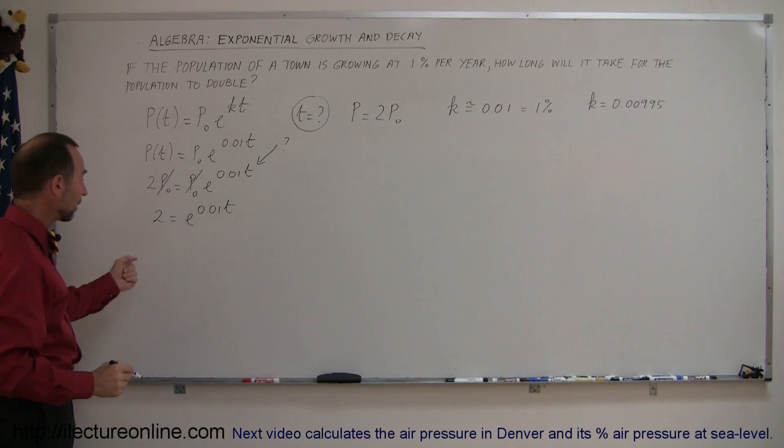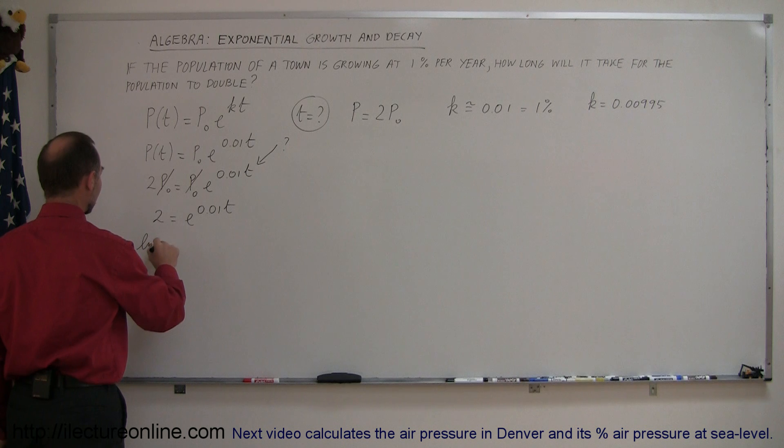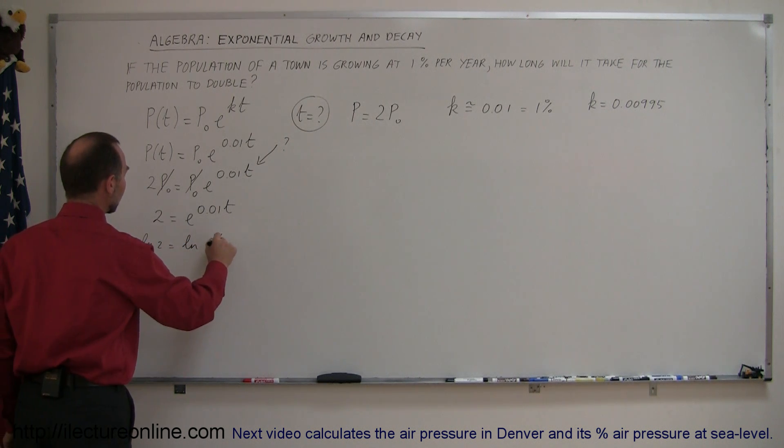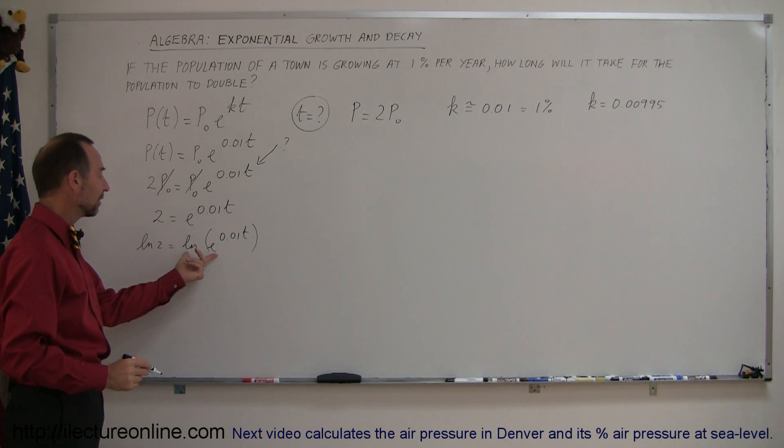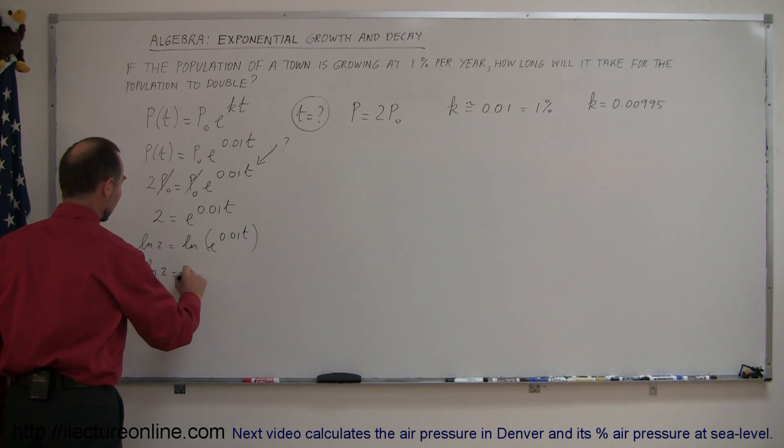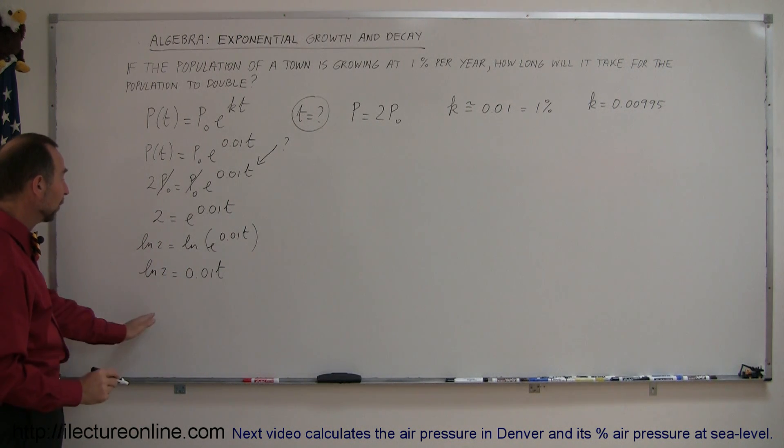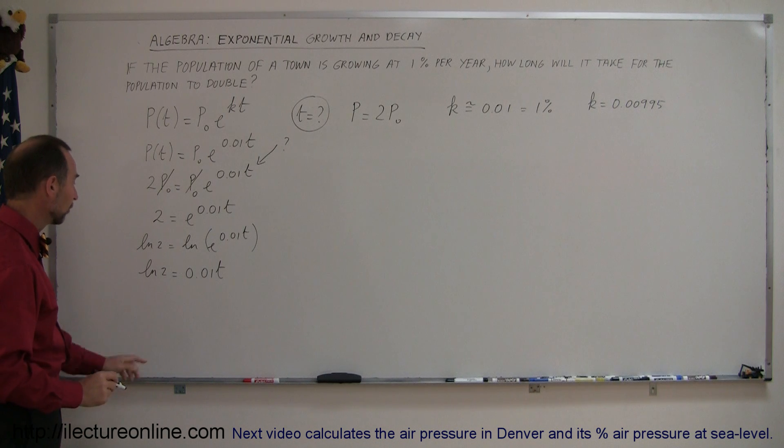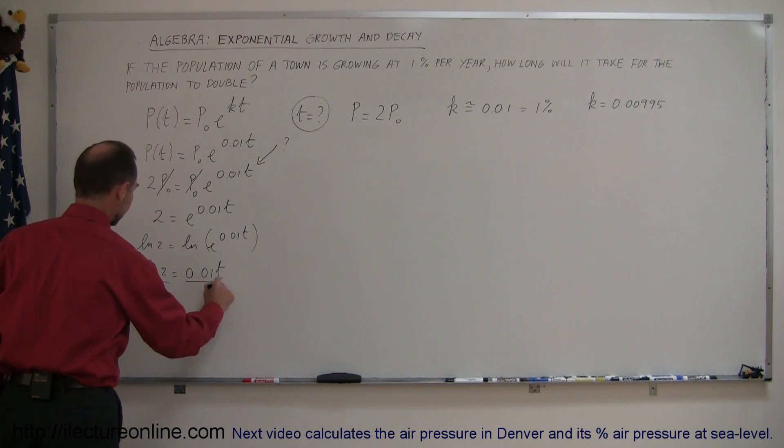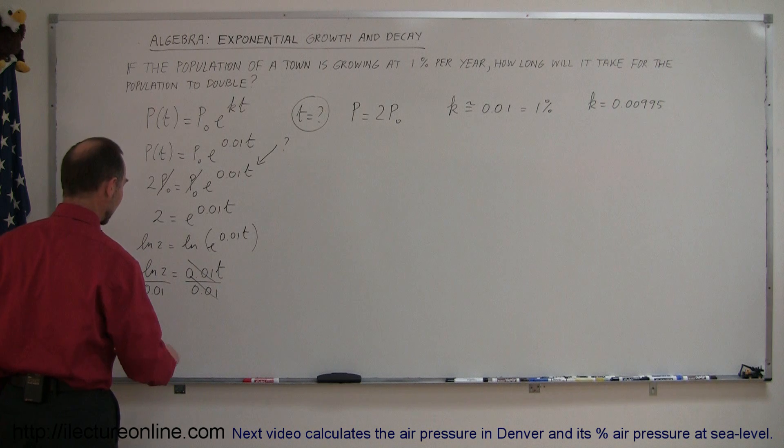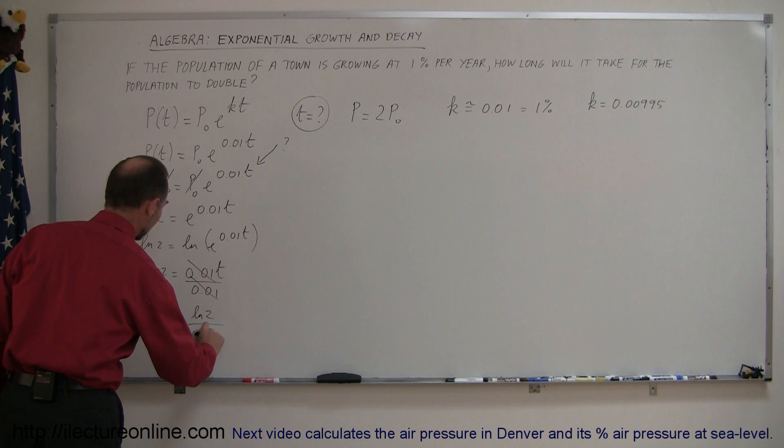Now, to isolate t, we're going to take the natural log of both sides. By doing that, we can negate the exponential. So, we take the natural log of 2 is equal to the natural log of e to the 0.01t. When you take the natural log of an exponential, that negates the exponential, and we can now write the natural log of 2 is equal to 0.01t. That was the reason why we took the natural log of both sides in the first place, to get rid of that exponential form. Now we can solve for t by dividing both sides by 0.01, which is the coefficient in front of t, so that cancels out. By turning the equation around, I can say that t is equal to the natural log of 2 divided by 0.01.